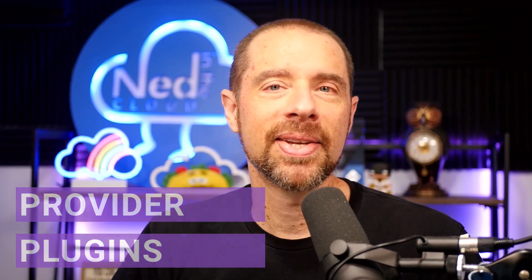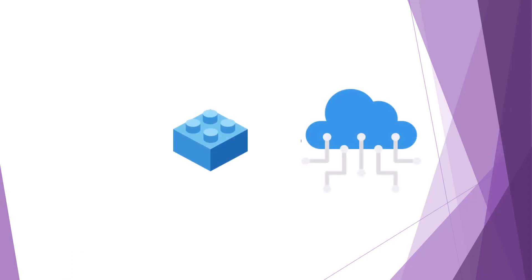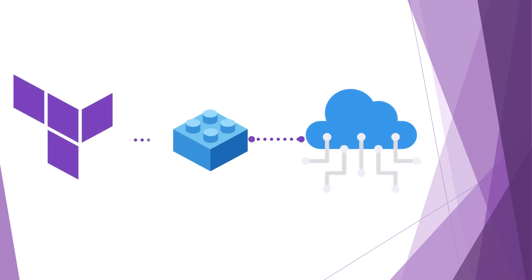The Terraform binary handles all the core Terraform functionality, but it doesn't know how to talk to the various cloud providers and other services that exist out there. That's where provider plugins come in — they are the superpower that lets Terraform deploy to any cloud or service. Each provider plugin is an executable that contains an understanding of the API for a particular service, and it presents that API to Terraform by using a defined protocol.